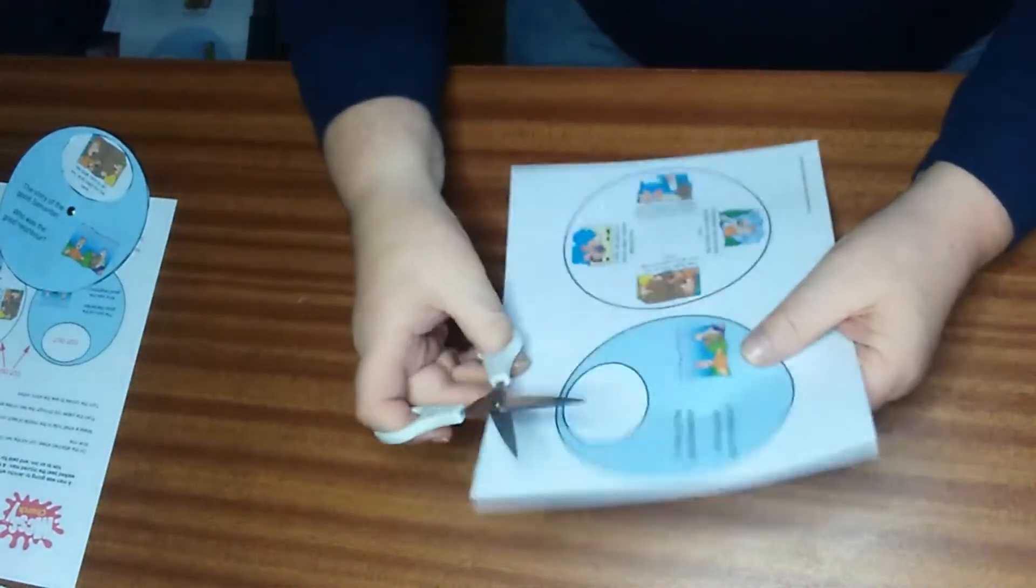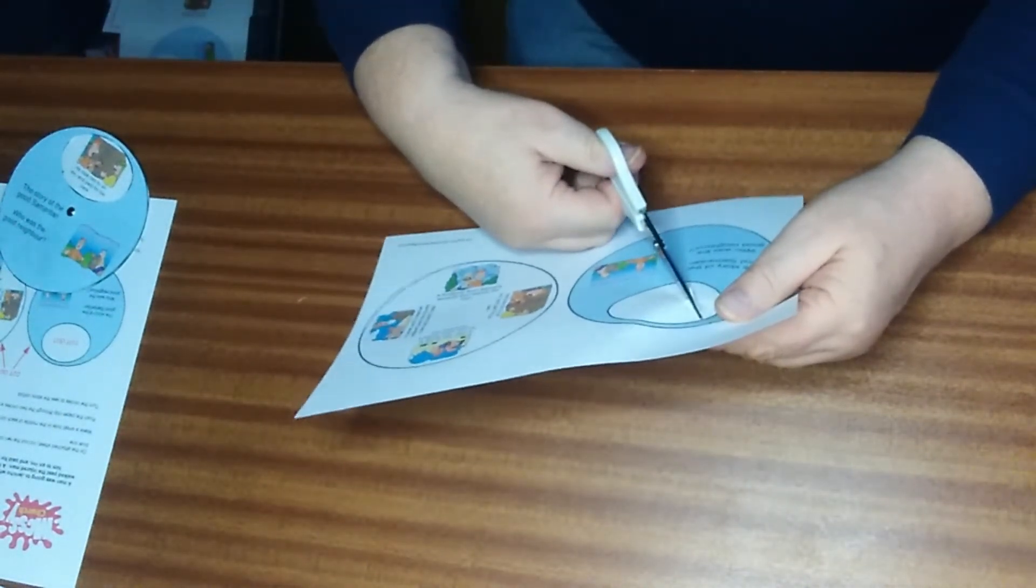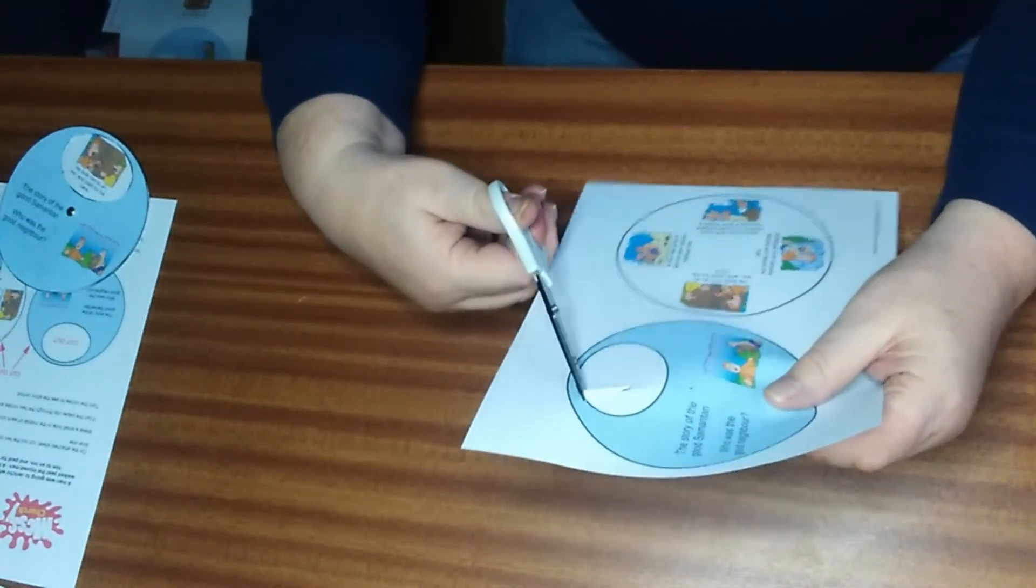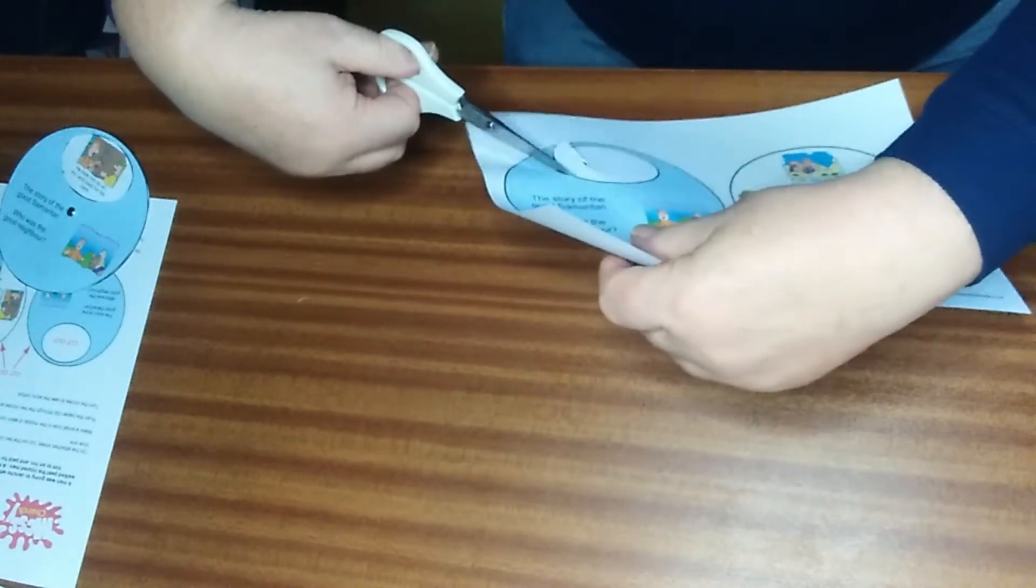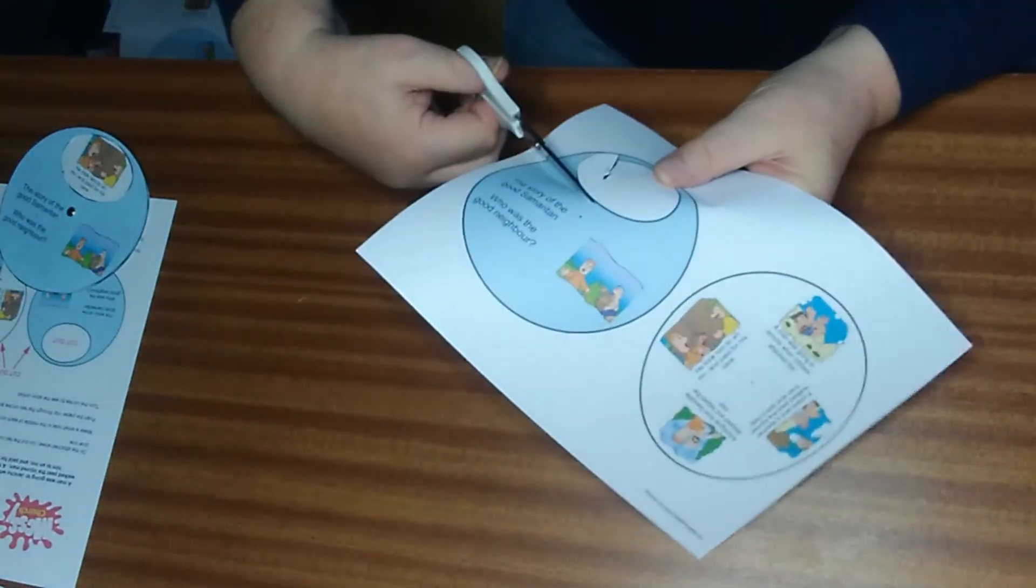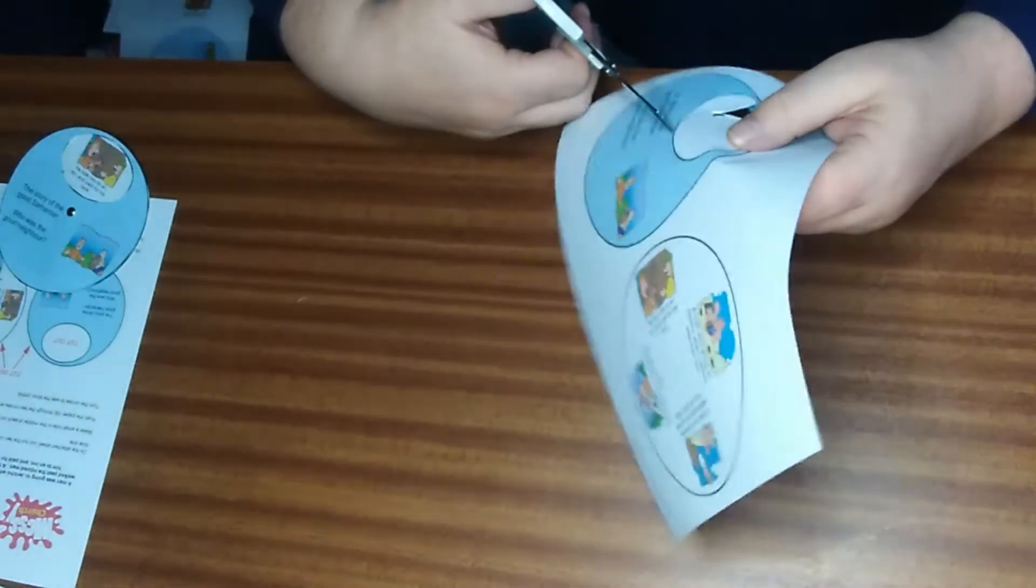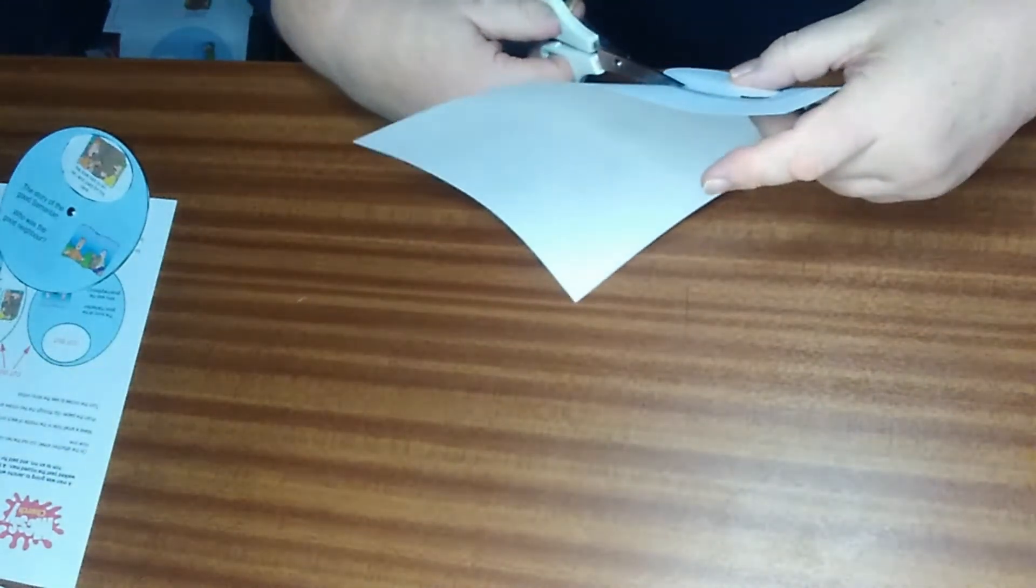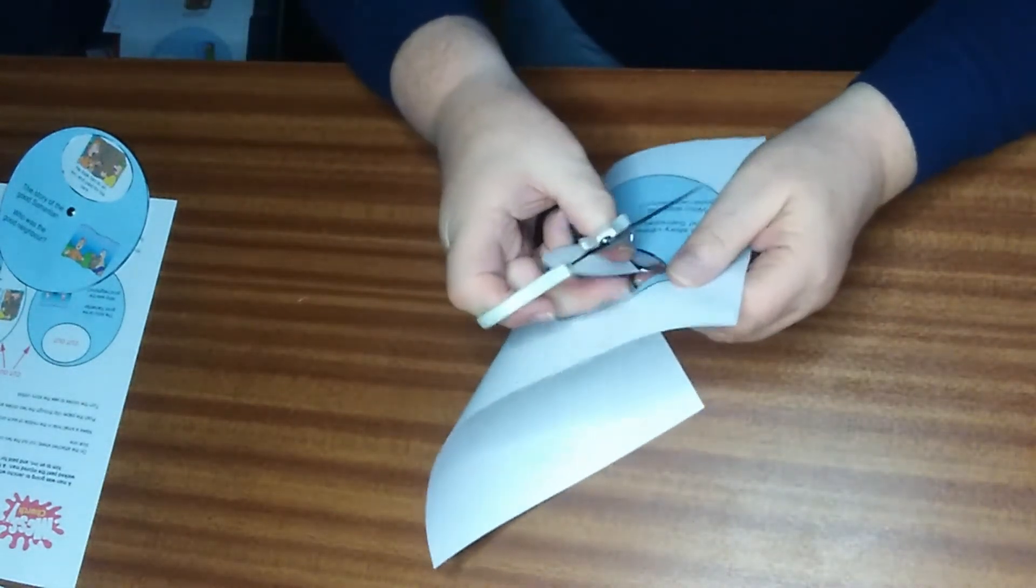We'll begin by cutting out the white oval from the blue circle. This can be a bit tricky, so you might need to get some help starting it off. We throw the white piece away, and now we're ready for the next step.